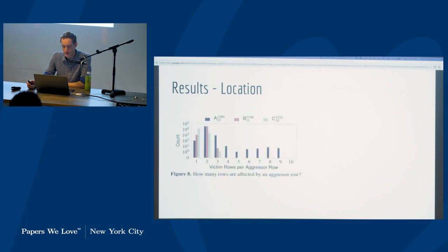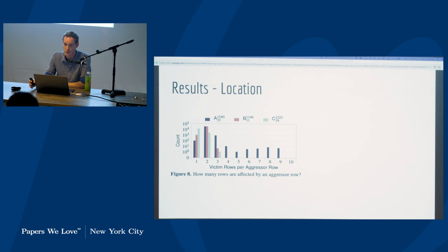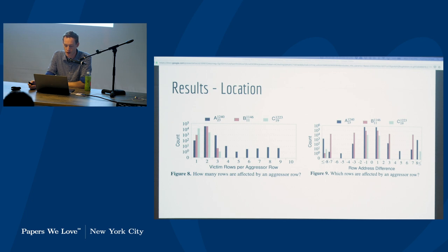Location findings: victim rows per aggressor row. An aggressor row is where they're reading values from; victim rows are where they've managed to flip a bit. You would expect it to be one or two neighboring rows, but weirdly, some chips hit up to three rows away, and chip A hit up to nine rows away — a pretty surprising result for how much you'd expect voltage to be dropping off. They also examined which rows see differences. One outlier showed up at about a 2,000-row offset, but they think that was a bad cell that had been relocated, so the physical layout wasn't identifiable.